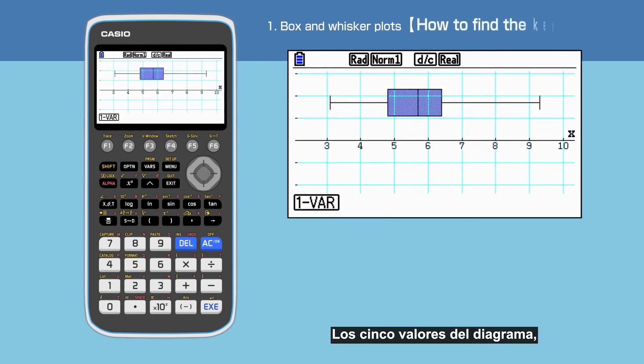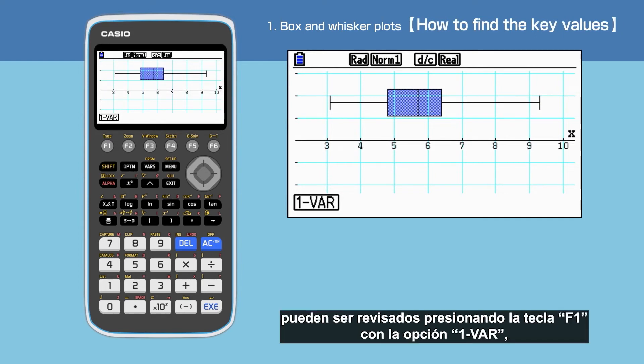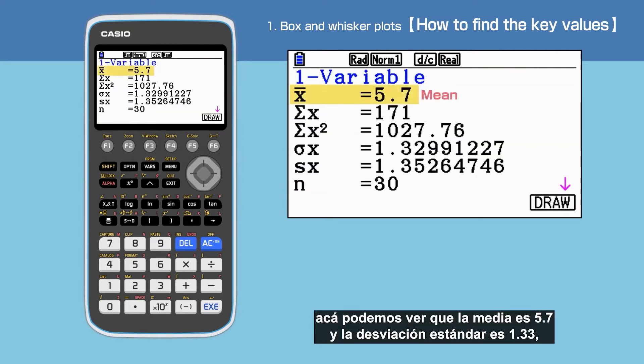The 5 number summary as well as mean and standard deviation can be checked under F1 1 var. Here we can see that the mean is 5.7 and the standard deviation is 1.33.